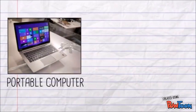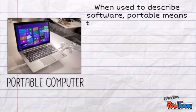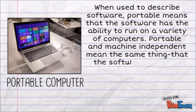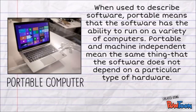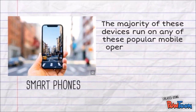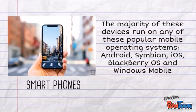Seventh are portable computers — small and lightweight hardware. A portable computer is small enough to carry and includes notebook and sub-notebook computers, handheld computers, palmtops, and PDAs. Lastly are smartphones — mobile phones with highly advanced features. A typical smartphone has a high-resolution touchscreen display, Wi-Fi connectivity, web browsing capabilities, and the ability to accept sophisticated applications.